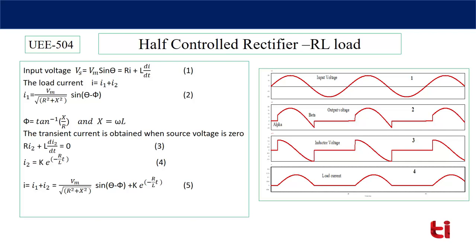Let's find i2. For the transient component: R·i2 plus L·di2/dt equals zero. Solving this first-order differential equation gives i2 equals K·e^(−R/L · t), where K is a constant depending on the initial value of the circuit. So the net current i equals the steady-state current plus transient current: i equals Vm divided by √(R² + X²) times sin(θ − φ), plus K·e^(−R/L · t). This is equation number five — the expression giving the net current flowing through the circuit.